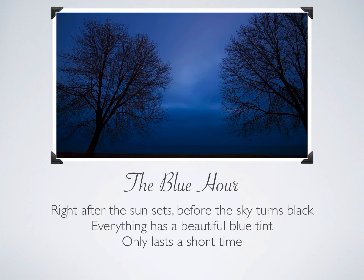After the golden hour, we actually have something called the blue hour that not too many people talk about, because a lot of times people will go to watch the sunset and leave as soon as it's gone. But if you stick around for a little bit, there's a very short amount of time after the sun sets where everything is blue before it is dark. Right after the sun sets, before the sky turns black, everything has a beautiful blue tint — and it only lasts a very short amount of time. That's the blue hour.